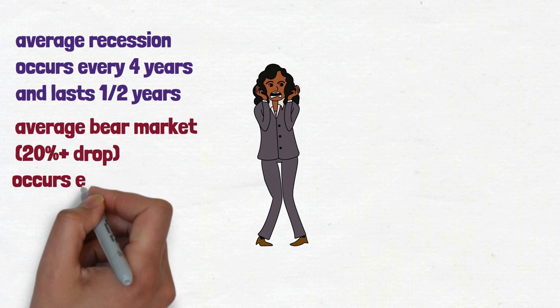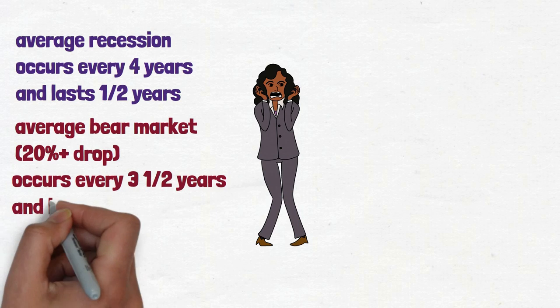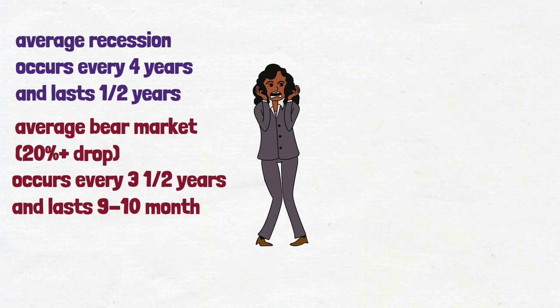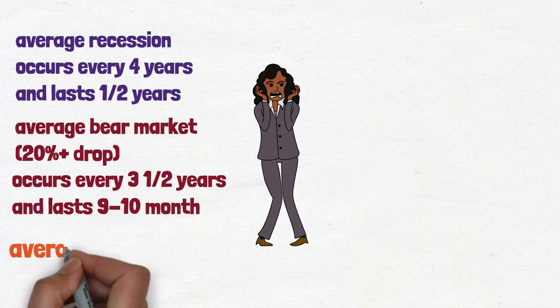An average bear market, periods when the value of stocks falls by at least 20%, happens roughly every three and a half years and lasts between nine to ten months. During this time, the average market decline is about 35%.